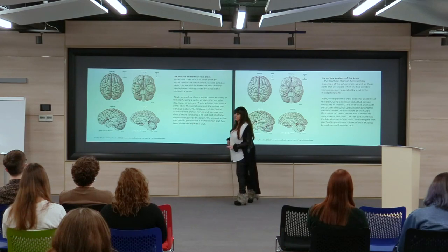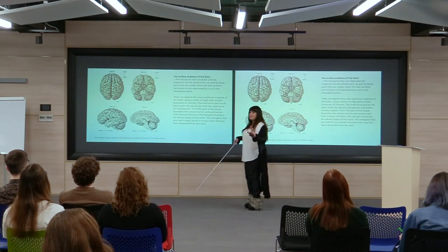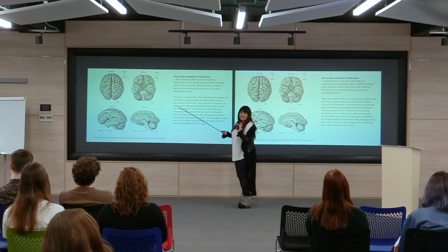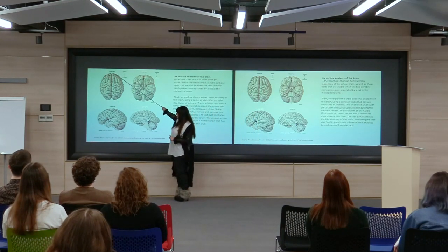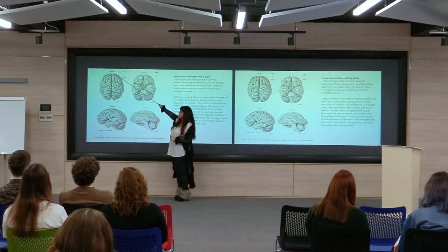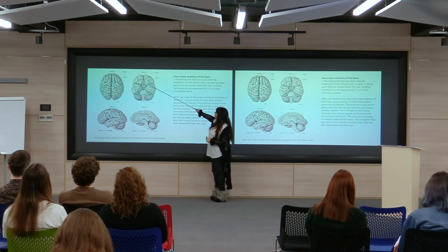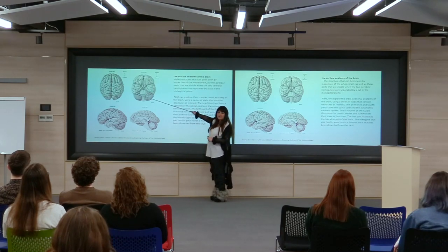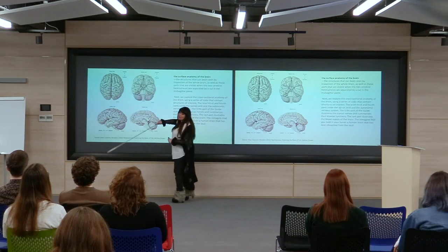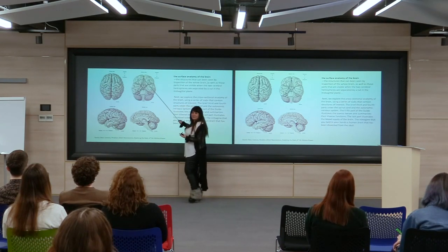Now let's study the surface structure. The top view is the dorsal view of the brain, with the frontal part being anterior and the rear being posterior. The bottom is the ventral view. The anterior and posterior parts look quite different in the ventral view. In the dorsal view they look more similar by appearance, but are different in function. The lateral view shows the brain from the side, with anterior and posterior parts.